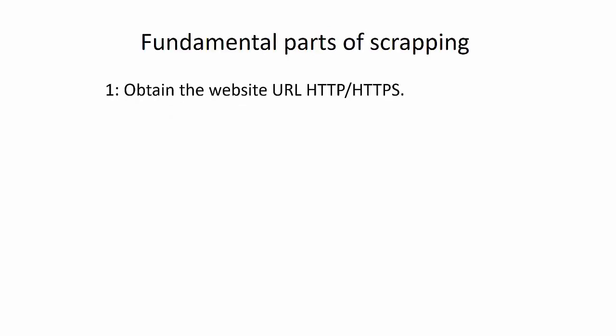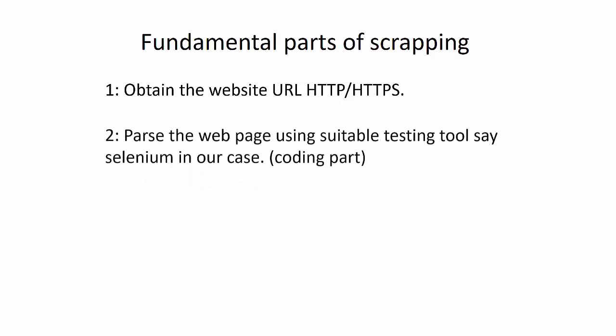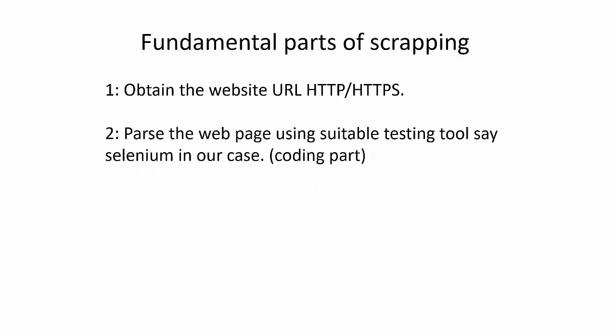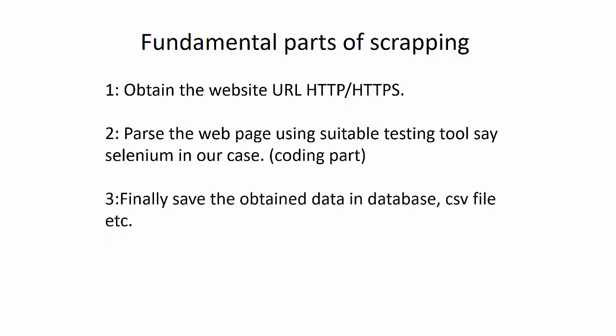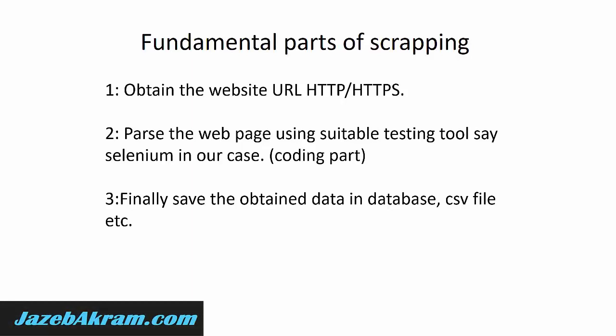The fundamentals of web scraping have three parts. First, hit the website URL where you want to get the data. Second, the coding part using a testing tool like Selenium. Third, save the obtained data in a database, CSV file, or Excel file. Keep these three rules in mind: get the website URL, do the coding, and save the data in a readable format. Once you have the URL and are ready to code, you need Selenium.